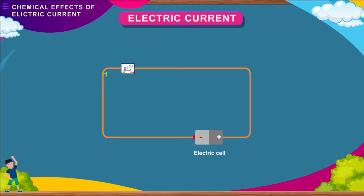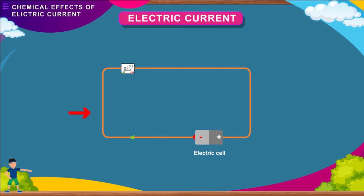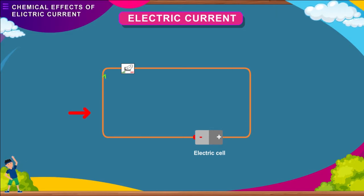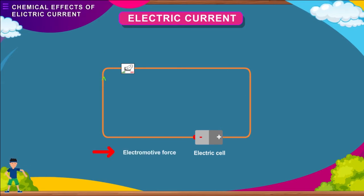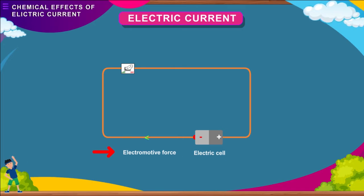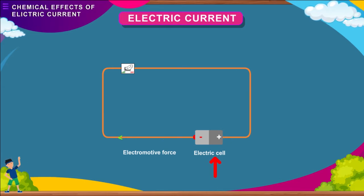Two components are necessary for an electric current to flow. Firstly, a continuous unbroken path or circuit is needed for the current to flow through; a switch is inserted in the circuit to make or break it as required. Secondly, we need a driving force called electromotive force, which pushes the electrons that carry the charge around the circuit. This force is provided by an electric cell or a generator.